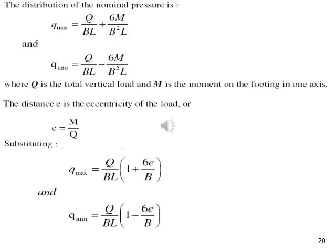For an eccentric loading, Q max is equal to Q by BL plus 6M by B squared L, the distribution of the normal pressure Q max. Eccentric loading. Naturally, the eccentric loading M is equal to Q into E. So you get maximum and minimum stresses on either side of the footing.